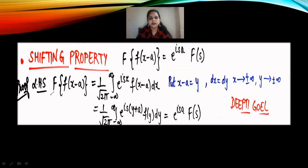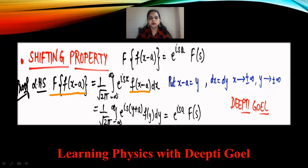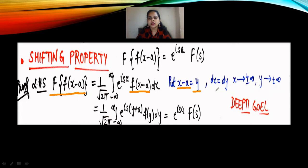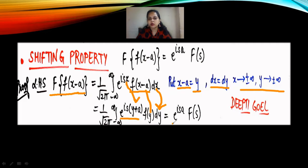For the proof of the shifting property, we take F[f(x−a)] = (1/√2π) ∫₋∞^∞ e^(ιsx) f(x−a) dx. Let x−a = y, so dx = dy and limits remain −∞ to ∞. Substituting: x = y+a, x−a = y. Making these substitutions, we find a term e^(ιsa) which is a constant taken out of the integral, and whatever is left inside is F(s). Thus F[f(x−a)] = e^(ιsa)·F(s). This is the shifting property.